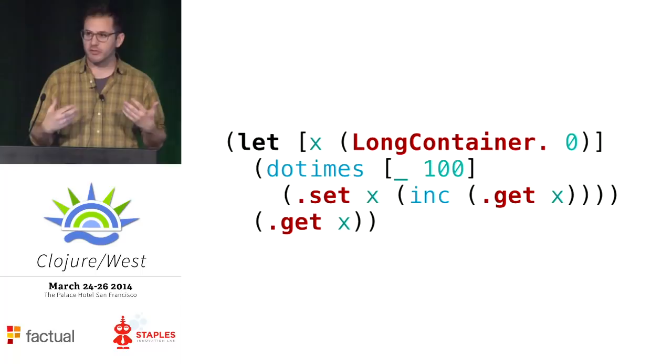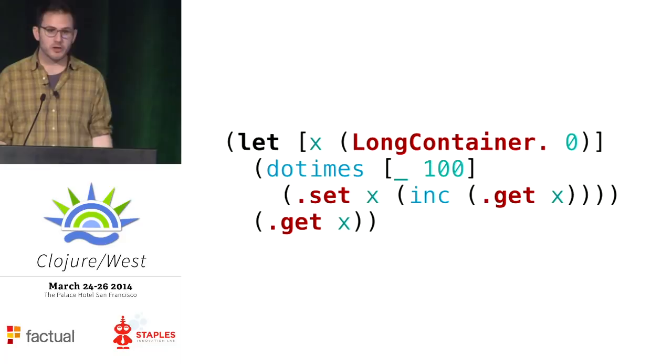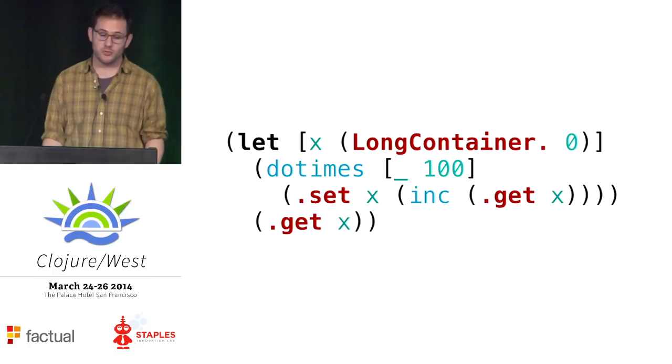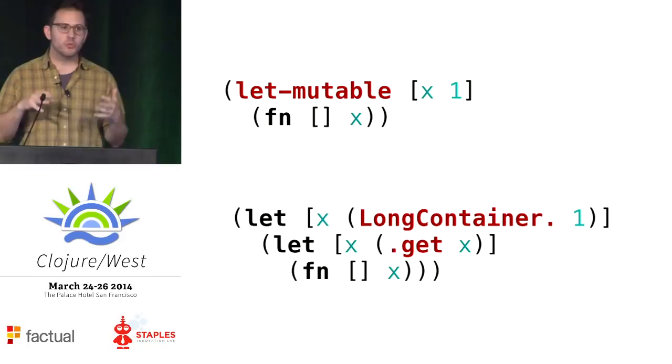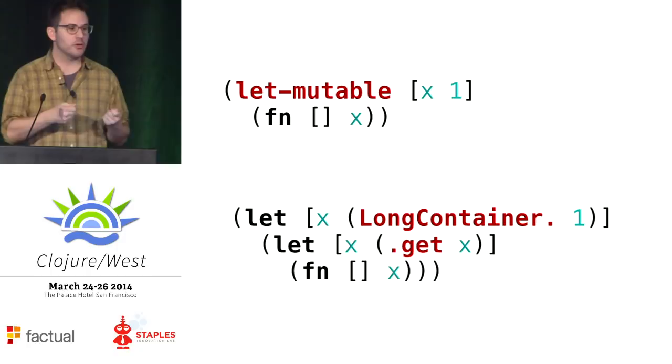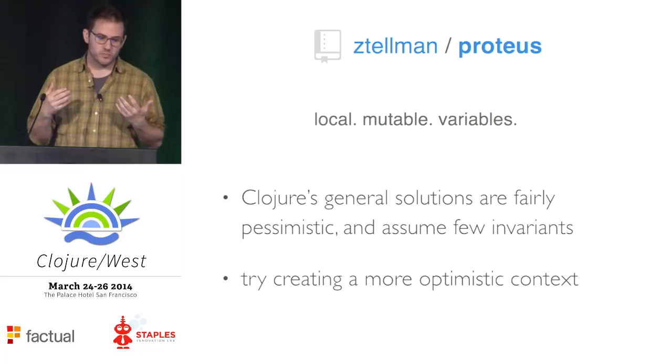What let-mutable looks like is fairly straightforward. We create a container — a long container, so we don't box the number. Wherever we see X, we expand that out into get-x, except where we have set!, which expands into set-x. The only concern is that if we close over this container, it might escape to another thread. So we enforce that whenever we create a closure, we turn the container into just the value. This is safe and bounded — it does not change any of the invariants that Clojure gives us.